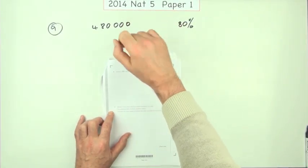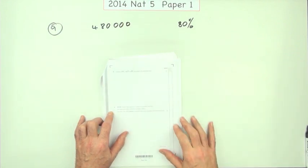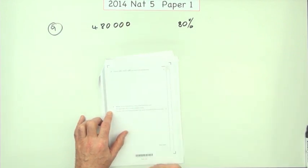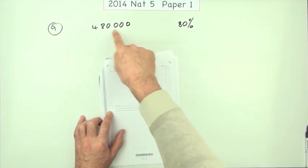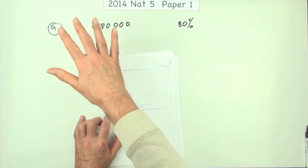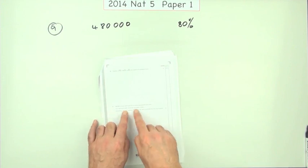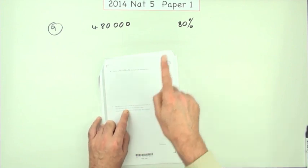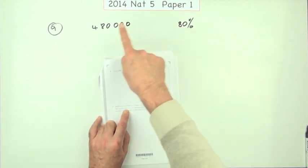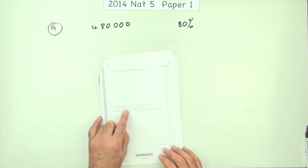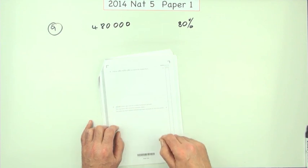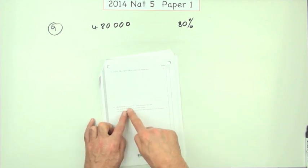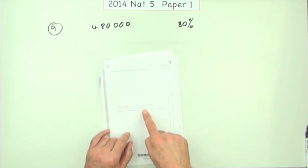Number nine from the first paper of the 2014 National Five. This looks like a reverse percentage — reverse in the sense that you're not working out the answer because it's telling you the answer; you have to work out what you had to begin with. It says 480,000 tickets were sold, and that was 80% of the available ones.